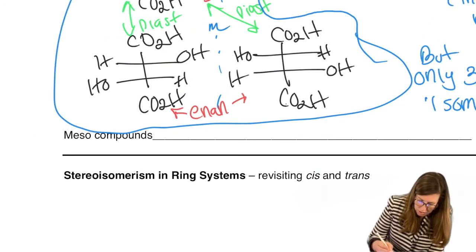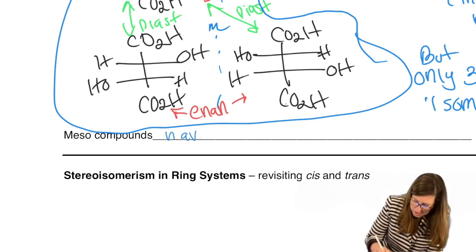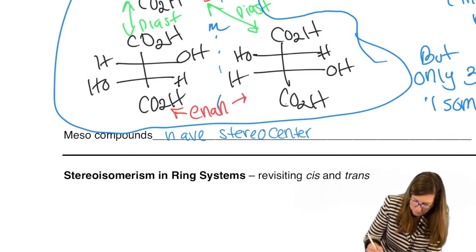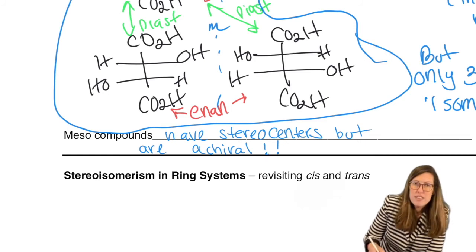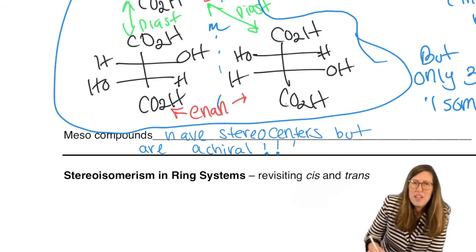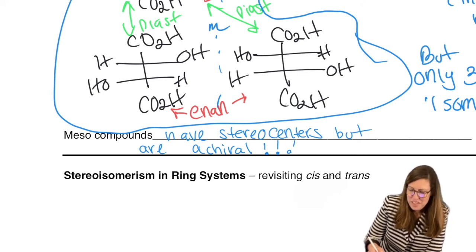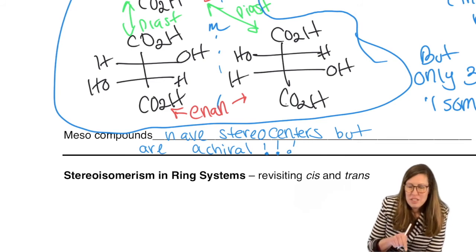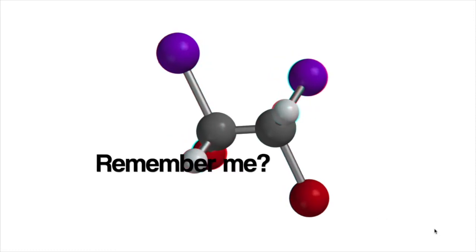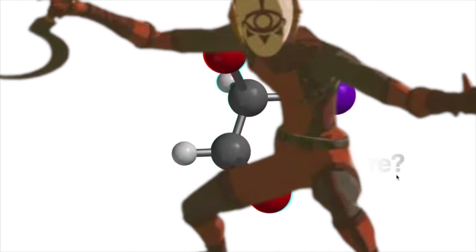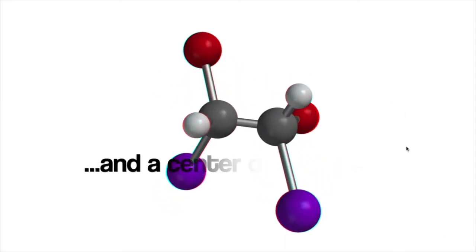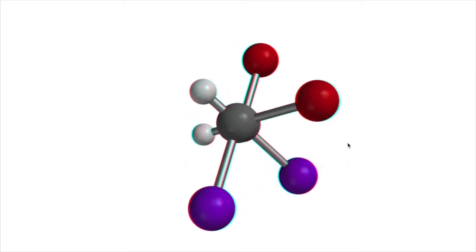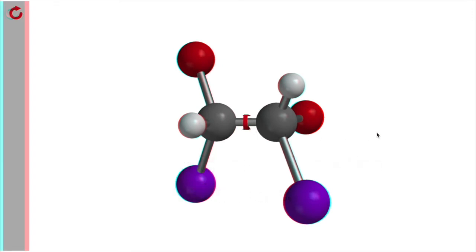Meso compounds have stereocenters but are achiral. Take these seriously. This is like the biggest villain in the whole chapter. Very scary. Kind of fun when you get the hang of it. But yeah, they could be the bane at first. So you got to get the upper hand on those guys.